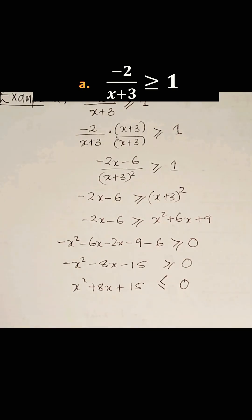Now let's factorize the left hand side. We get (x+3)(x+5) less or equal to 0.